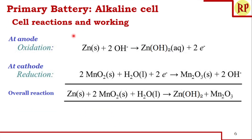Now let us look into the cell reactions. At the anode, as always, oxidation occurs. The anode is a zinc container. Zinc reacts with 2OH⁻, which we get from the KOH electrolyte solution, and forms zinc hydroxide (Zn(OH)₂) while releasing two electrons.